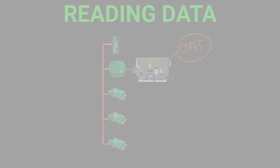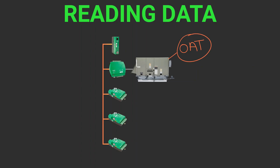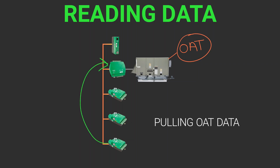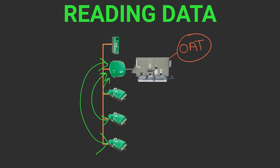When reading data, the controller generates a request for information from another device. Here, we are reading, or pulling, an outdoor air temperature from a sensor located on another controller. The request is generated and sent to the controller with the outside air sensor, which receives the request and replies with a message containing the outside air temperature value.